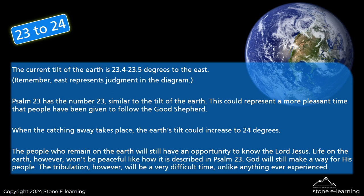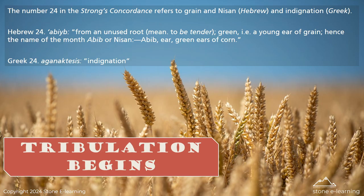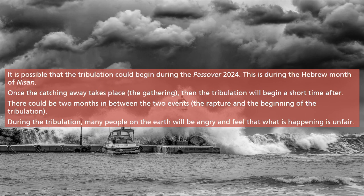The tribulation, however, will be a very difficult time, unlike anything ever experienced. The number 24 in the Strong's Concordance refers to grain and Nissen in Hebrew, and indignation in Greek. Hebrew 24 — Abib — refers to an unusual root meaning 'to be tender, green,' i.e., a young ear of grain, hence the name of the month Abib or Nissen. It is possible that the tribulation could begin during the Passover 2024, during the Hebrew month of Nissen. Once the catching away takes place — the gathering — then the tribulation will begin a short time thereafter. There could be two months between the rapture and the beginning of the tribulation. During the tribulation, many people on the earth will be angry and feel that what is happening is unfair.